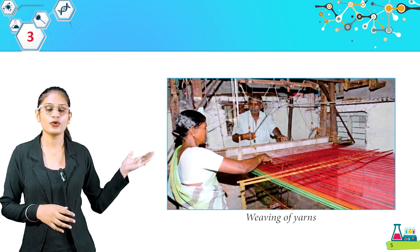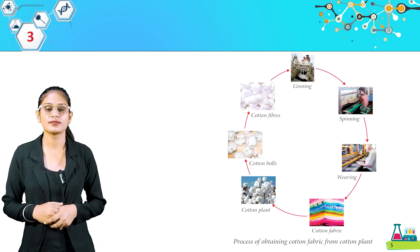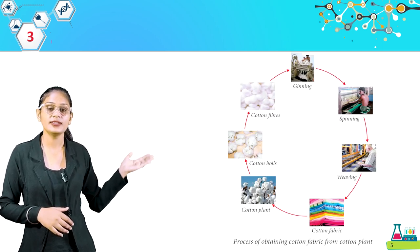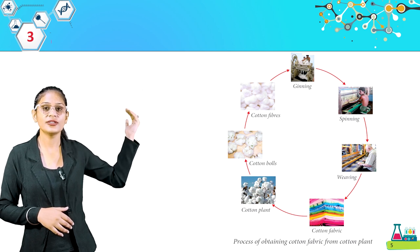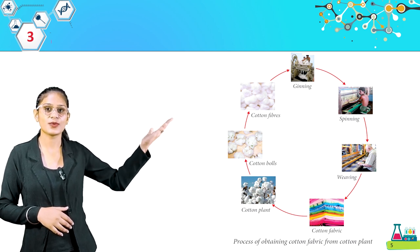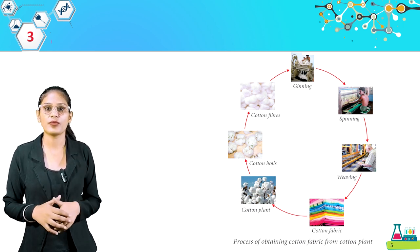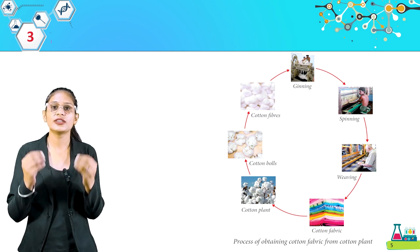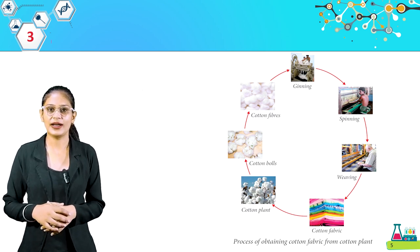Weaving of yarns. Look at this picture: cotton plant, cotton bolls, cotton fibers, ginning, spinning, weaving, cotton fabric — this is the complete process of obtaining cotton fabric from cotton plants.